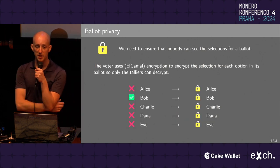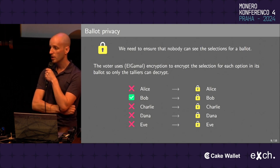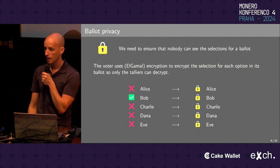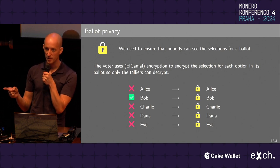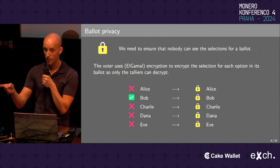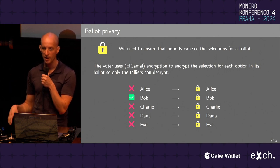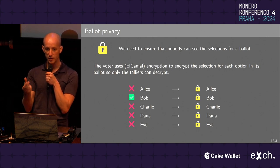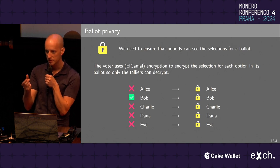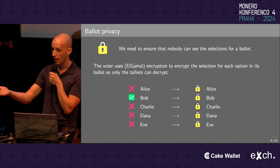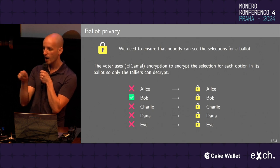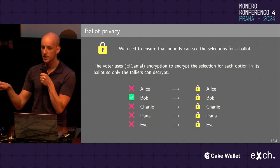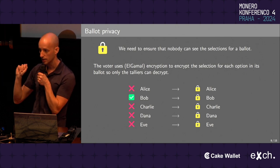Let's look at ballot privacy — making sure nobody can see, by looking at a ballot on the ledger, which selections the voter chose. We do this using El-Gamal encryption. There are many ways to encrypt data, but El-Gamal has a very specific structure that allows us to reason about what we're encrypting. The voter uses El-Gamal encryption to encrypt the selection for every option on the ballot in such a way that only the tallying entities can decrypt it later.